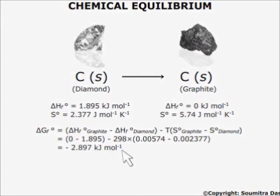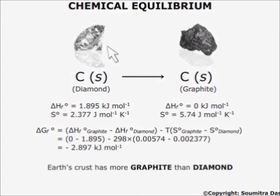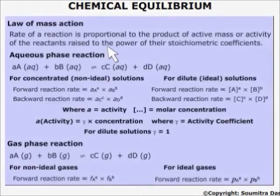This is because the reaction kinetics is very slow and the change cannot be visualized even if we keep a piece of diamond on the table and wait for centuries. However, the spontaneity of this reaction is not false, which can be realized from the fact that earth has more graphite than diamond in its crust. So when we come to reaction kinetics, we have to study the law of mass action.